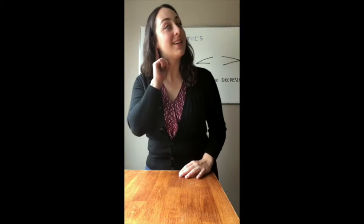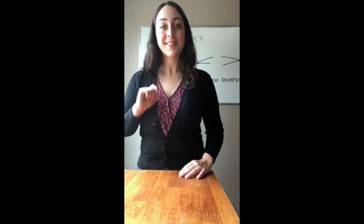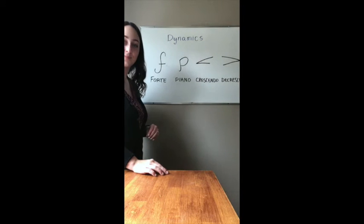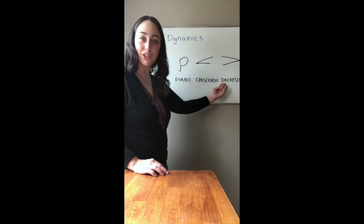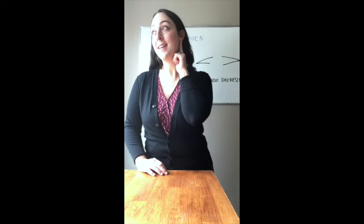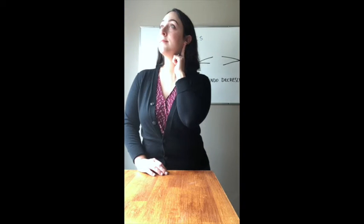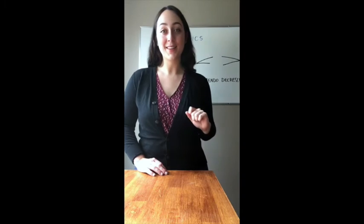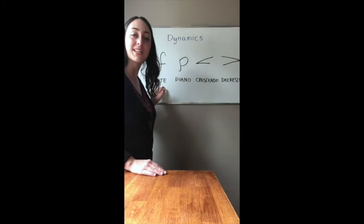Let's listen to our second one. Make your guess. The answer is that one was decrescendo — so it went from loud to soft. Let's listen to another one. Which one did you think that one was? The answer is that was forte. Remember, forte means the music is loud.